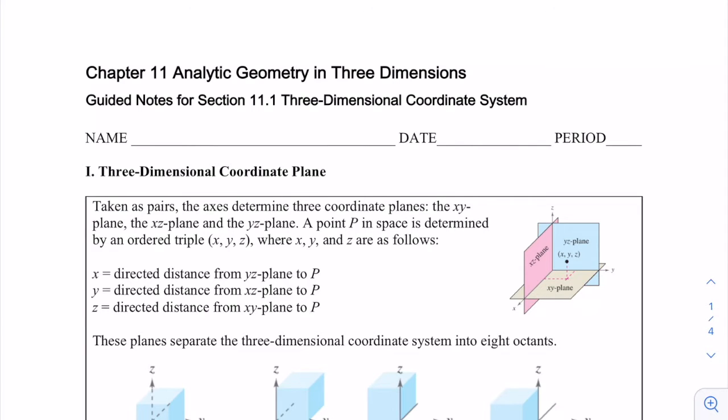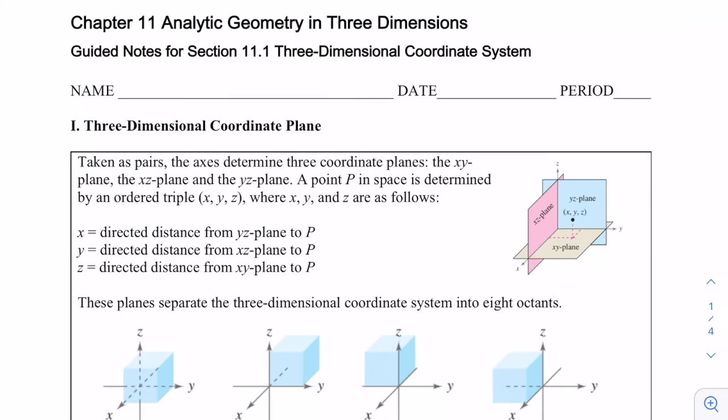With the three-dimensional coordinate system, we're just adding another plane. So we're adding the z-plane. x is the directed distance from the yz-plane, y is the directed distance from the xz-plane, and z is the directed distance from the xy-plane.